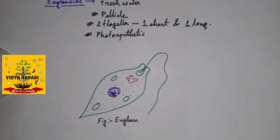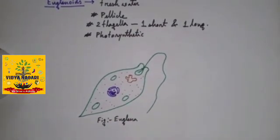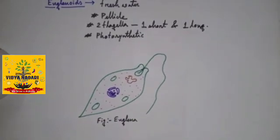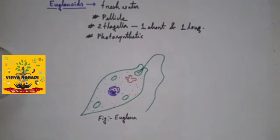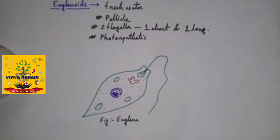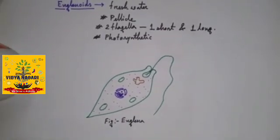In the presence of sunlight. When deprived of sunlight they behave like heterotroph by predating on the other small organisms. Their pigment are identical to those present in higher plants. Example of this family is Euglena.